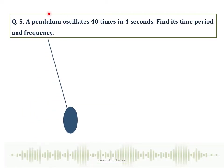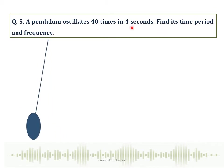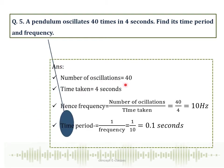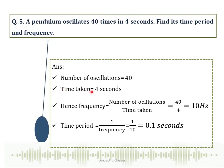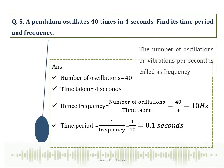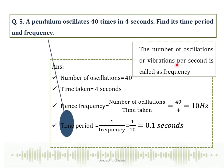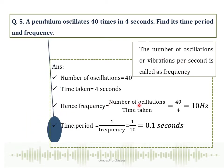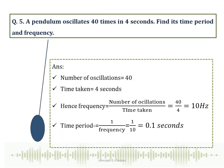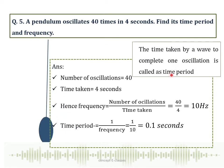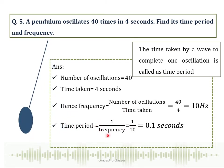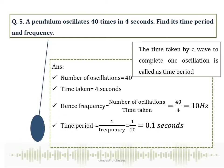Question number 5: A pendulum oscillates 40 times in 4 seconds. Find its time period and frequency. The number of oscillations is 40 and the time taken is 4 seconds. Frequency equals number of oscillations divided by time taken, which is 40 divided by 4, equal to 10 hertz. Time period equals 1 divided by frequency, which gives 0.1 seconds.